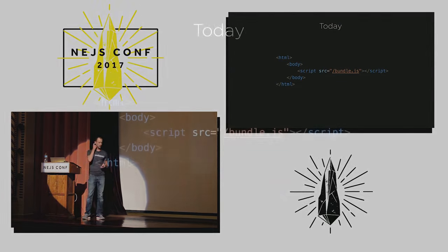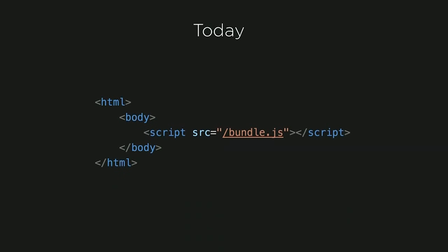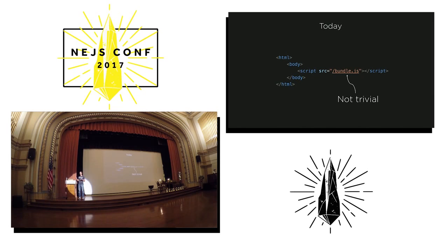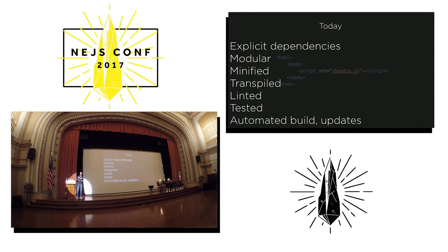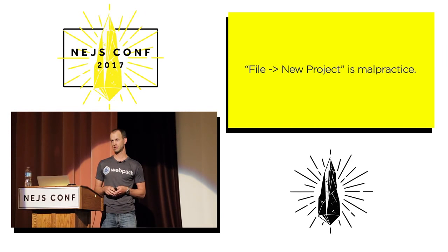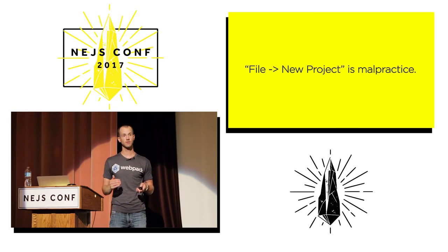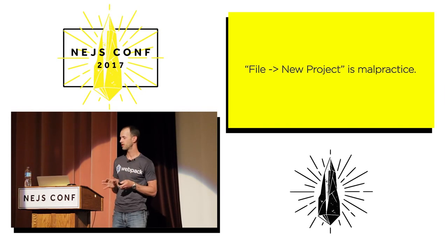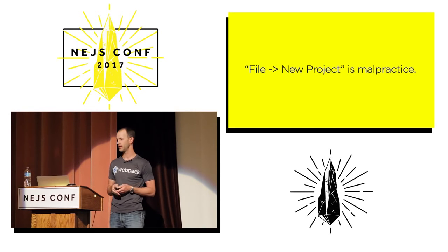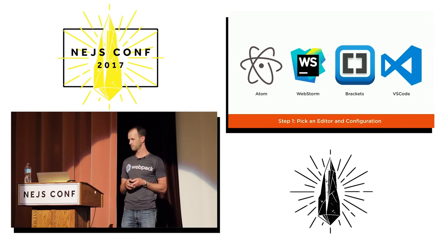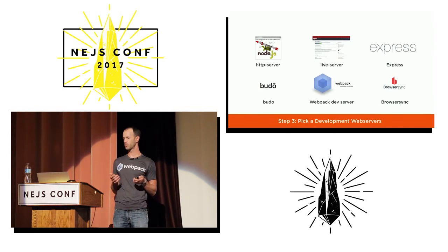Today we expect to publish an application to the web with a single minified bundle — maybe tree-shaken, maybe split page-to-page. That's not trivial. You want explicit dependencies, a modular, minified, transpiled, linted, and tested codebase with an automated build and automated updates. I believe file-new-project is malpractice. In my organization we do not do file-new-project. When we start from scratch we start from a foundation with literally over 75 different opinions baked into it. Think about the decisions you need to make: editor configuration, package manager, dev web server, automation approach, transpiler, bundler, linter, testing framework — the list goes on.